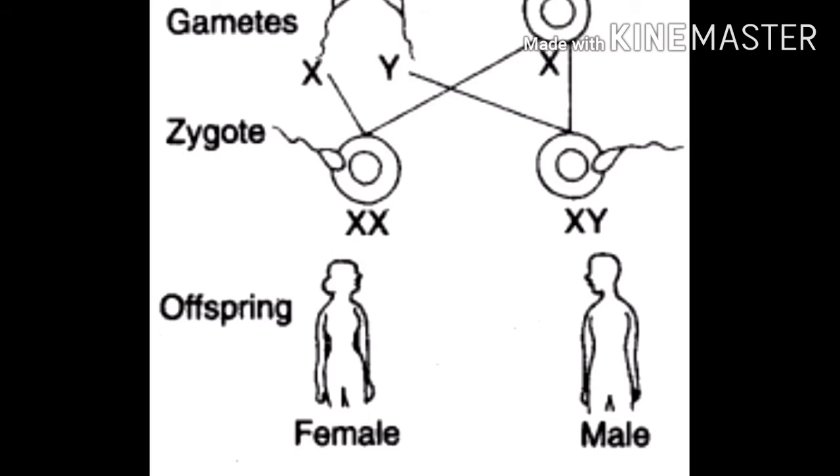In human females, the two sex chromosomes are similar and we represent them XX chromosomes. Thus, human female has 44 plus XX chromosomes. 44 means 22 pairs, these are autosomes. And the 23rd pair is the sex chromosome. So the 23rd pair in females is XX chromosomes.